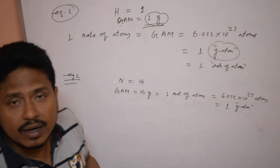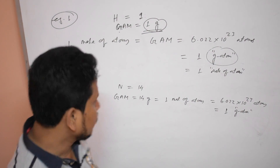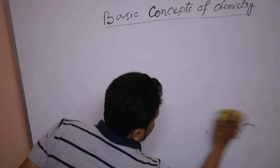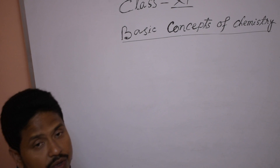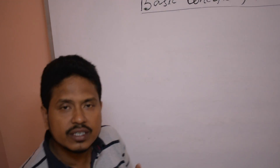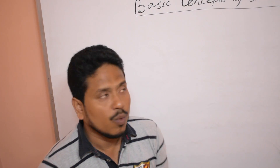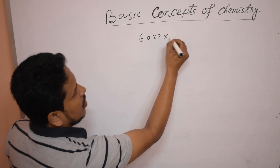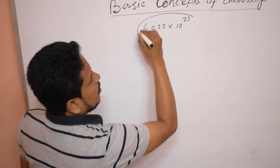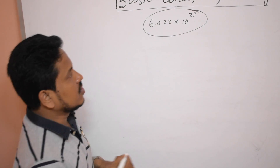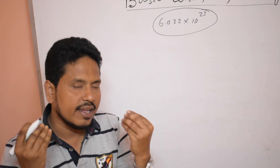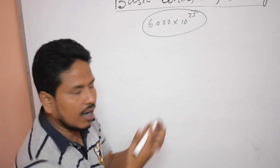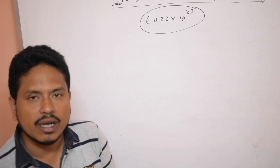I hope students you understand what is one mole and this is the mole concept related to atoms. Now let us proceed to the mole concept related to molecules. One mole quantity means a definite number of particles — Avogadro's number of particles is called one mole of particles. Now let us proceed to the mole concept in terms of molecules.